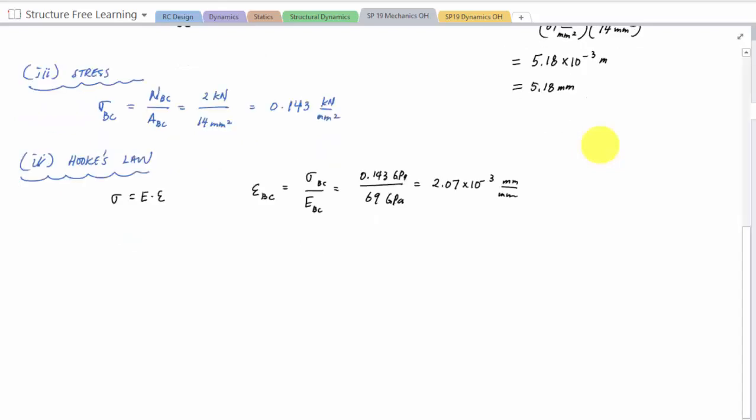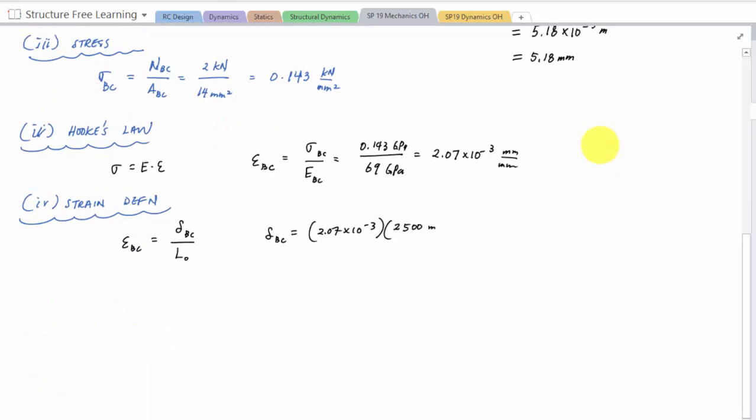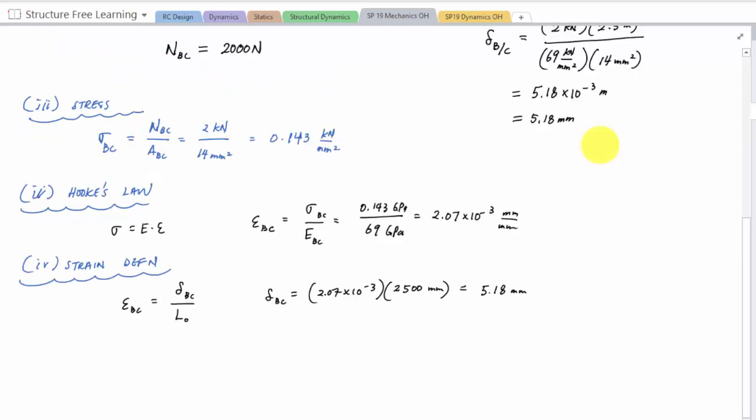And so here by Hooke's law, which is sigma equals E times epsilon, I can get the strain in BC. Epsilon BC is sigma BC over E, the modulus of elasticity of aluminum, which would be 0.143 gigapascals over 69 gigapascals. And that is divided by 69, 2.07 times 10 to the minus 3 strain, millimeter per millimeter. And then by the definition of strain, epsilon BC is delta BC over the original length of BC. And so delta BC, the change in length of BC is 2.07 times 10 to the minus 3 times the original length, which was 2,500 millimeters. And that would tell me times 2,500 is 5.18 millimeters, just like before the other way. So it matches, life is good. So I have the deformation of BC.